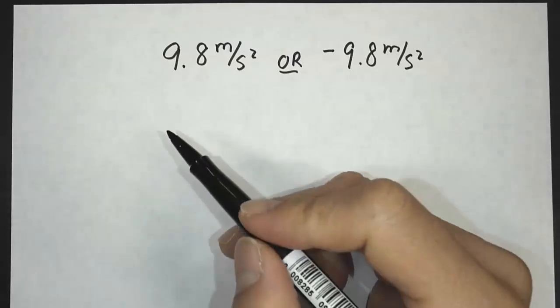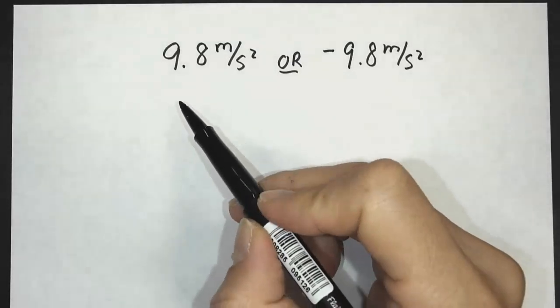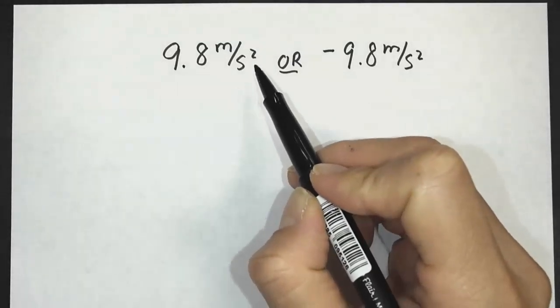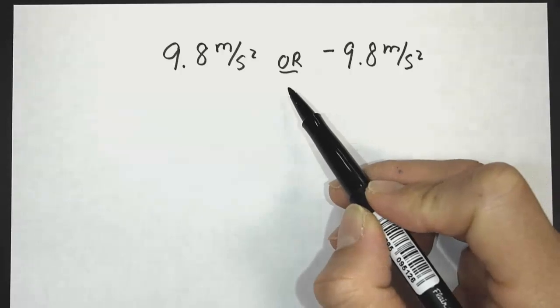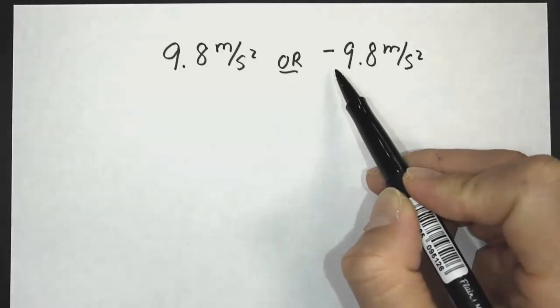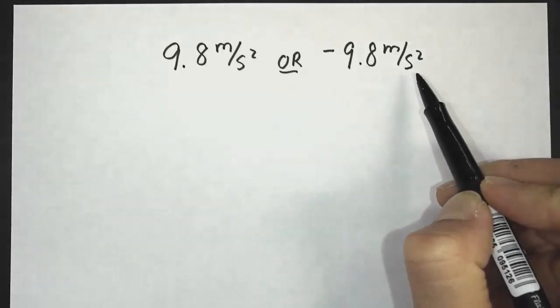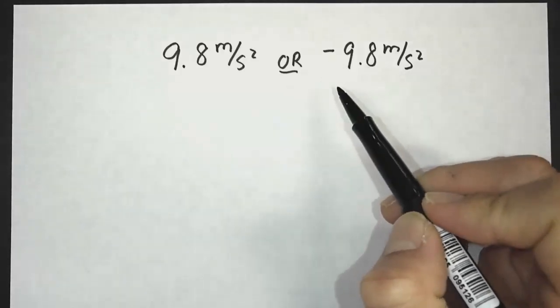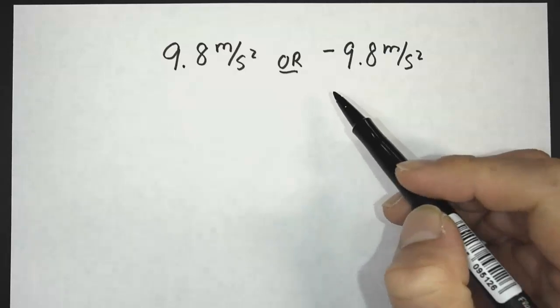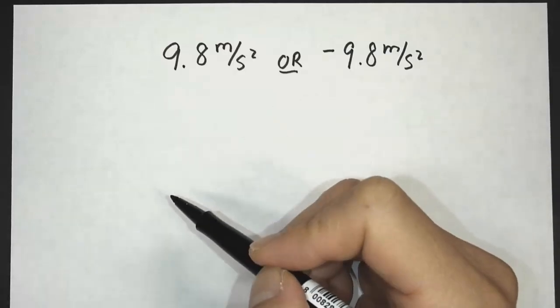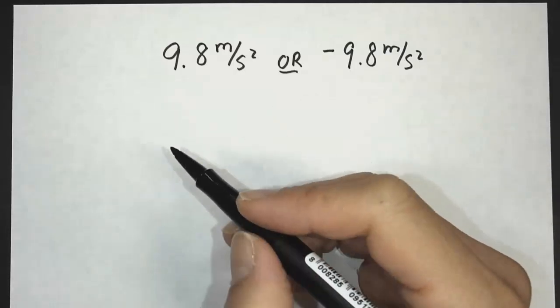In this video, I want to explain how do you know whether or not to use 9.8 meters per second squared or negative 9.8 meters per second squared for the acceleration when you're dealing with free fall or projectile motion.